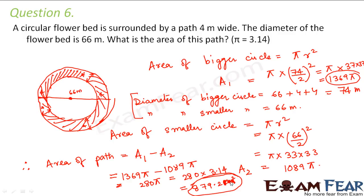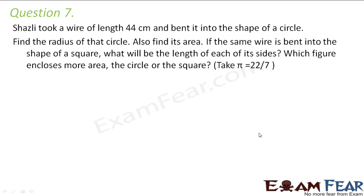This is the approach you should follow to solve real-life problems based on area and circumference of circles. Your first step should always be to draw a rough diagram so that you get a clear understanding of the problem. Question number 7: Shazley took a wire of length 44 centimeters and bent it into the shape of a circle. The total length of this wire is nothing but the circumference of the circle.